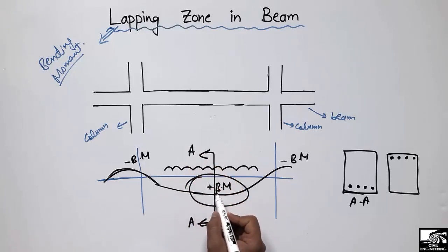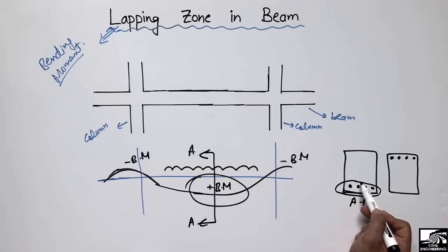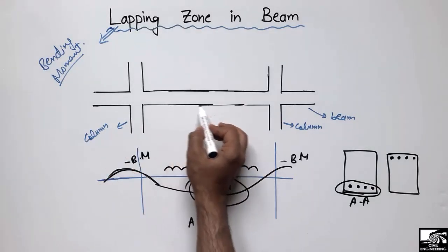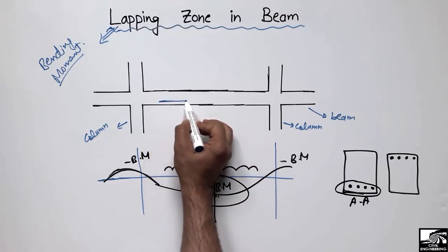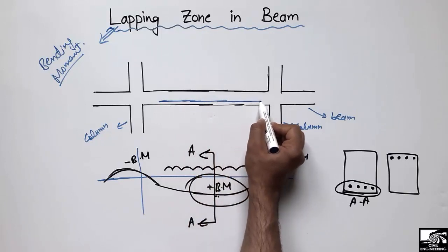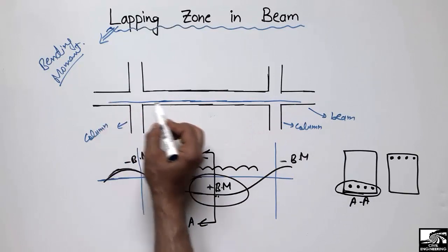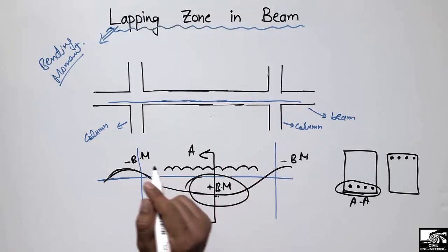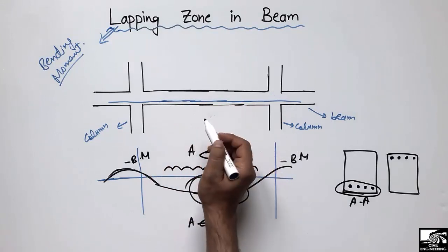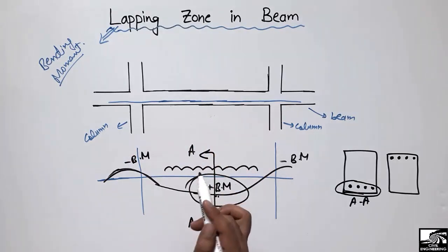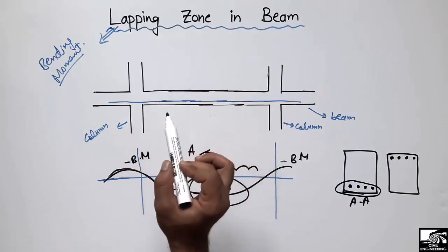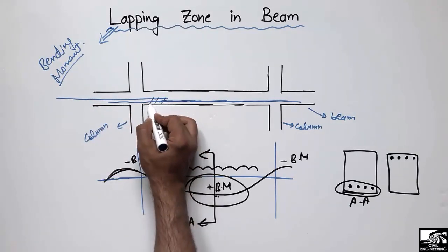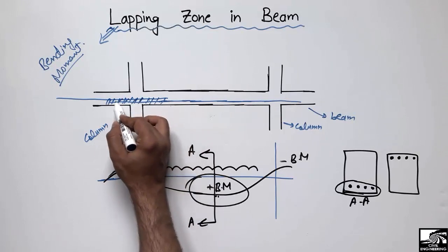We have maximum bending moment at the mid-span, so we provide reinforcement at the mid portion. Due to the maximum bending moment at the mid-span for the positive bending moment, we should not overlap our steel bars in the mid portion — the steel bar should go through continuously. We should not overlap here because it will decrease the strength of the beam section. We are only allowed to overlap the bottom reinforcement at the support sections.